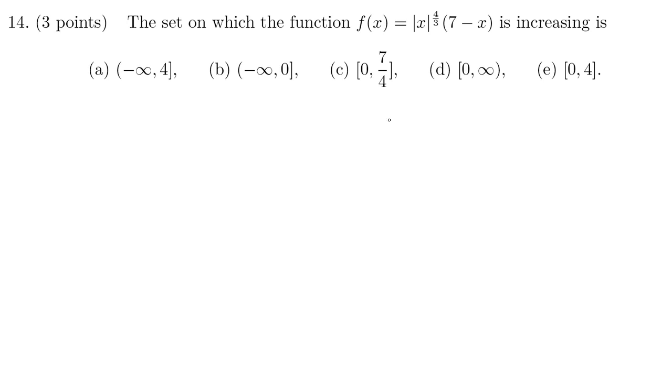All right. Number 14. The first thing I notice here is that absolute value of x to the 4 thirds is the same thing as x to the 4 thirds. So I would replace this function by just x to the 4 thirds. The absolute value of x to the 1 third is not the same as x to the 1 third because this formula is false when x is negative. But when you put that power of 4 on there, regardless if it's negative, both sides become positive. So I'm going to get rid of those absolute value bars and replace it with this formula.